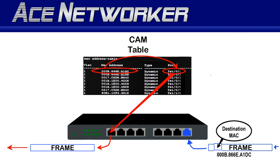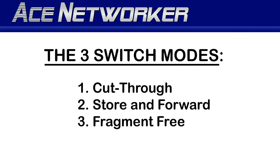The mode a switch uses determines the method by which the switch goes about forwarding that frame. Some modes read just a portion of a frame; other modes examine the entire frame. Each mode has its own benefits and drawbacks. The three modes a switch typically operates in are cut-through mode, store-and-forward mode, and fragment-free mode.